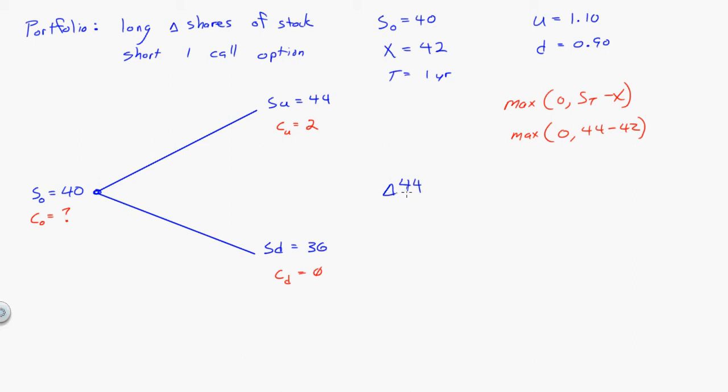So my stock position is worth delta times 44, but I have to pay two dollars to the guy that bought the option from me. If the stock price goes down, I have delta shares of stock that's worth $36. If I own exactly 0.25 shares, then I don't care if the stock price goes up or down. So 0.25 times 44 minus two is equal to nine dollars.